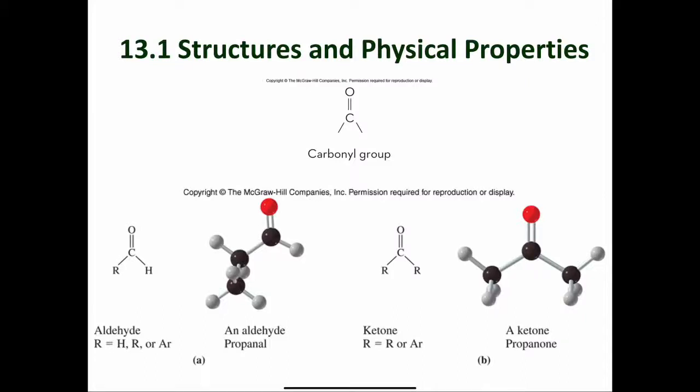Let's talk about the structures and physical properties of aldehydes and ketones, the topic of this chapter. The first thing you have to know is that there is a commonality in the functional groups of aldehydes and ketones, and that is the carbonyl group. We've seen this carbon with a double bond to oxygen before. In an aldehyde, the carbonyl group has an R group attached to it, and it also has a hydrogen attached to it. That R group can be an alkyl group or an aromatic group.